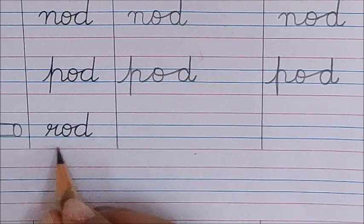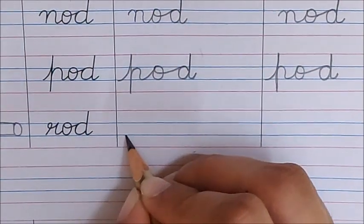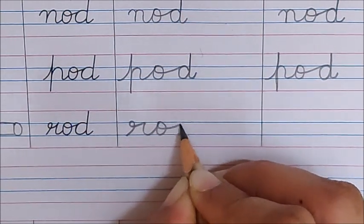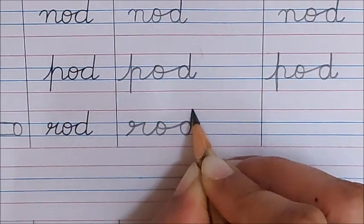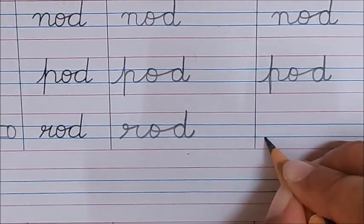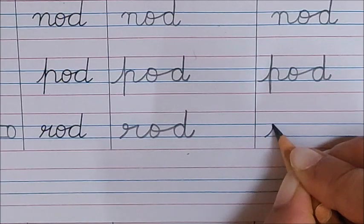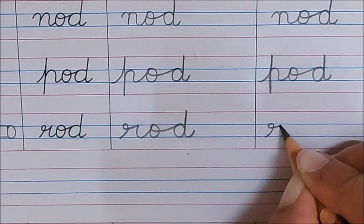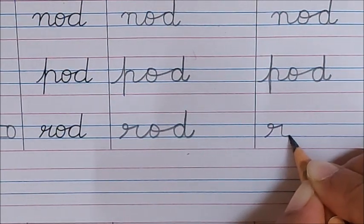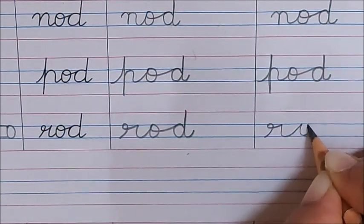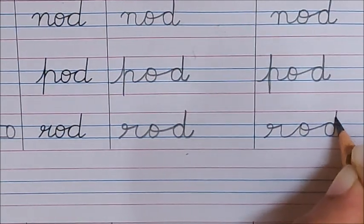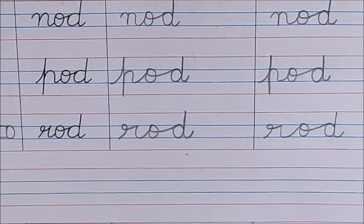Next word is rod. R, O, D, rod. Look children, how am I making R? Go up, make a small loop behind. Take it up, go down, and turn. R, O, D, rod. Okay children, what is the next word?